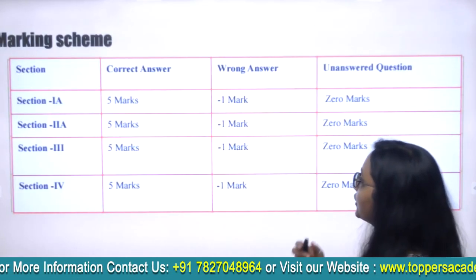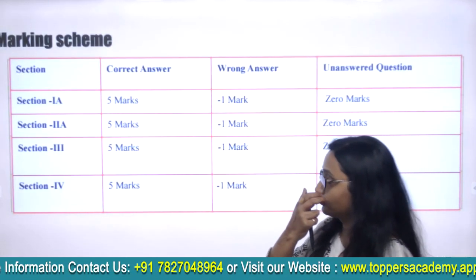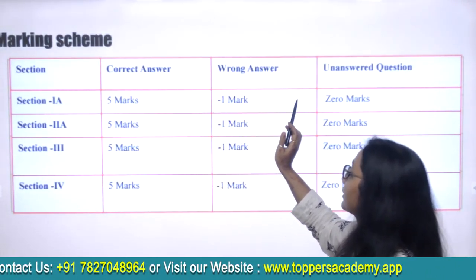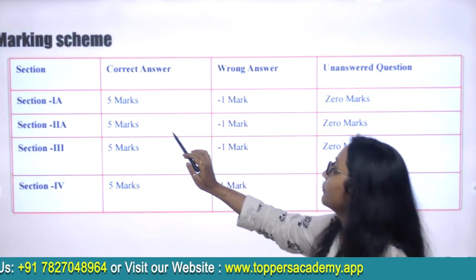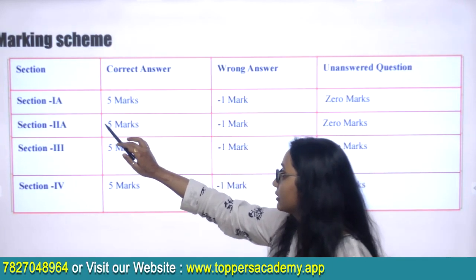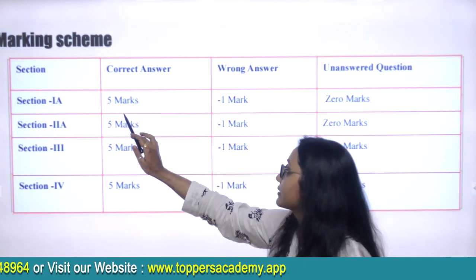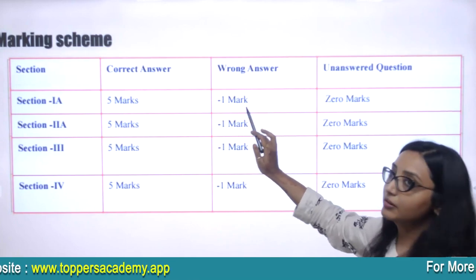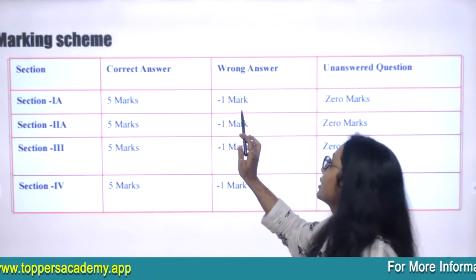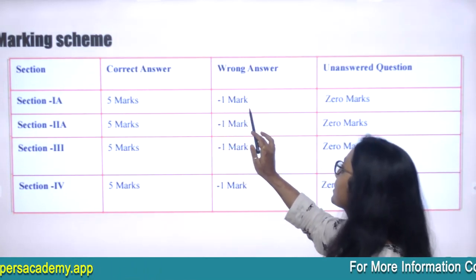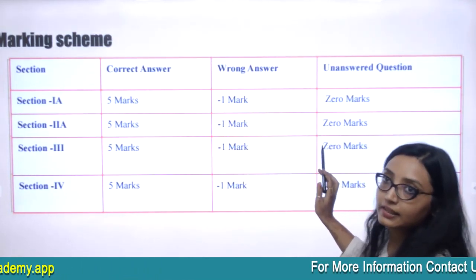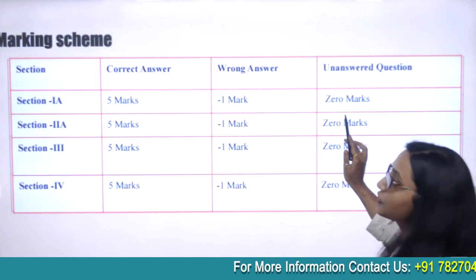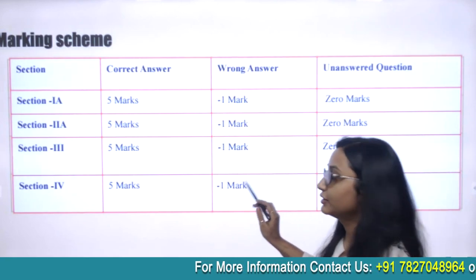For each correct answer, five marks will be given, and for each wrong answer, one minus mark will be deducted. For unanswered questions, zero marking applies.